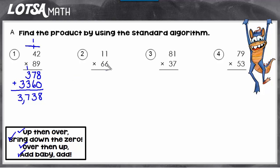Let's do number 2. It goes up then over, bring down the zero, over then up, add, baby, add. So we'll start right here with the 6 in the ones place. And go up, then over, then bring down the zero.